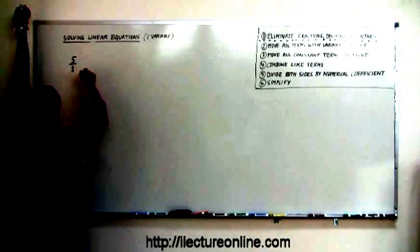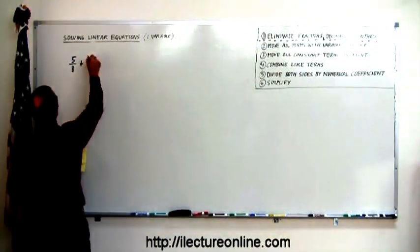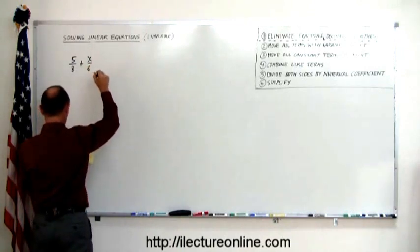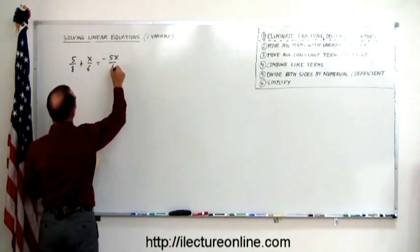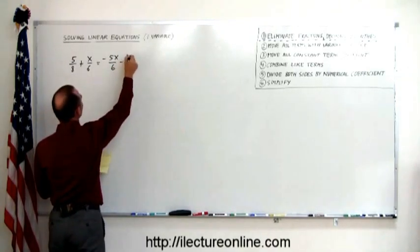5 divided by 8, plus x over 6, equals minus 5x over 6, minus 1/8.